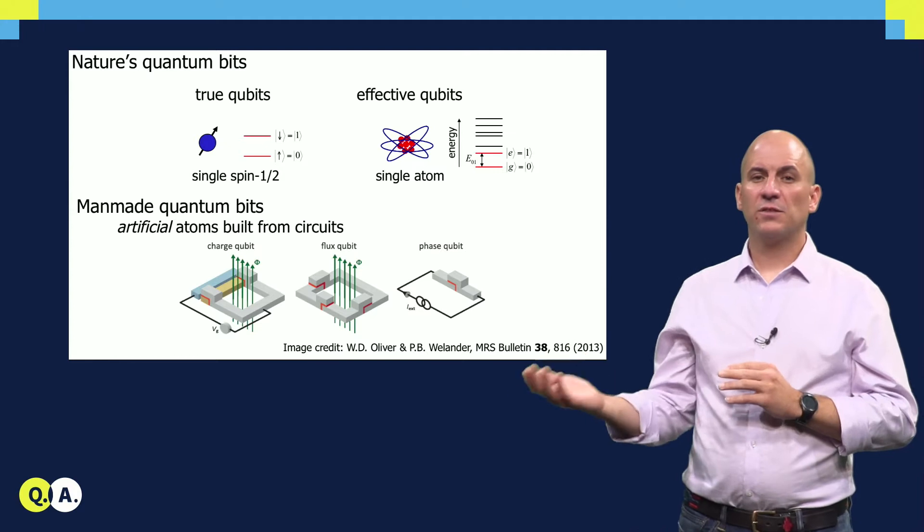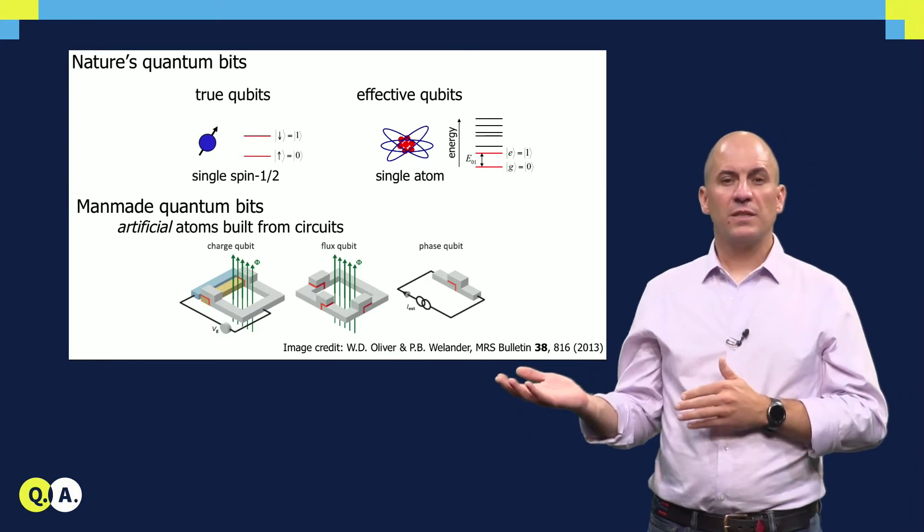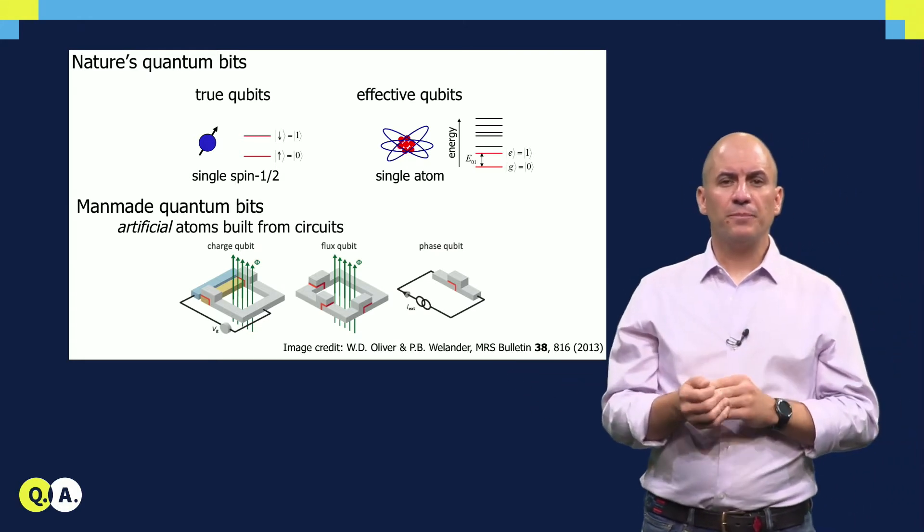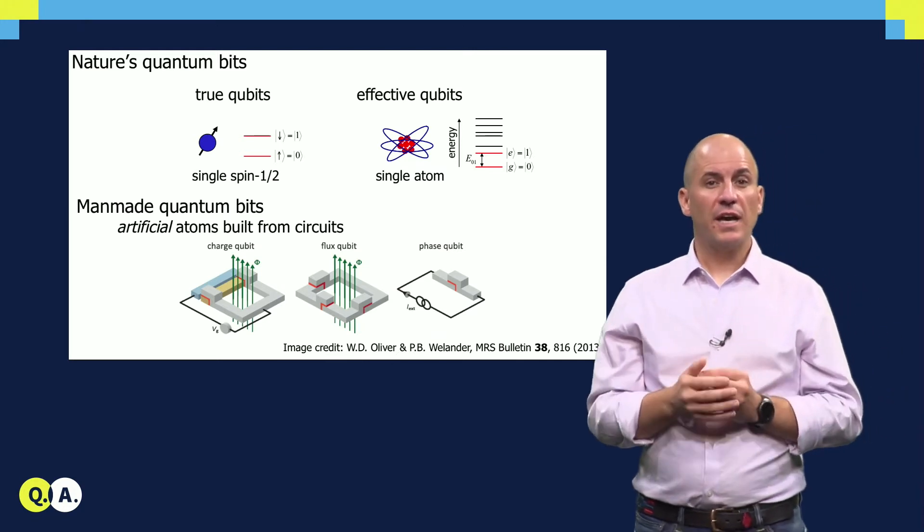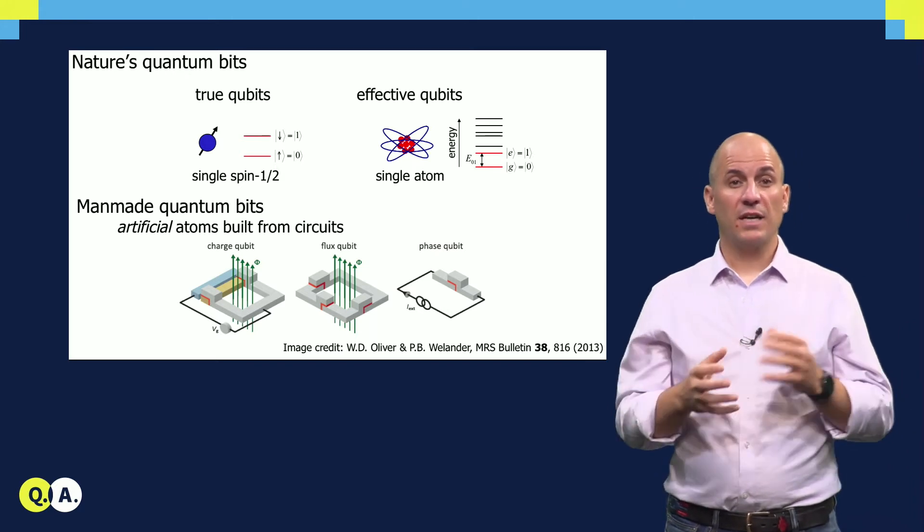There exist numerous varieties of superconducting qubits: the charge qubit, the flux qubit, the phase qubit, the fluxonium, and many more. These qubits differ in terms of the number of superconducting islands, the number of junctions, and also, quite importantly, the relative energy scales of the capacitive and inductive terms.